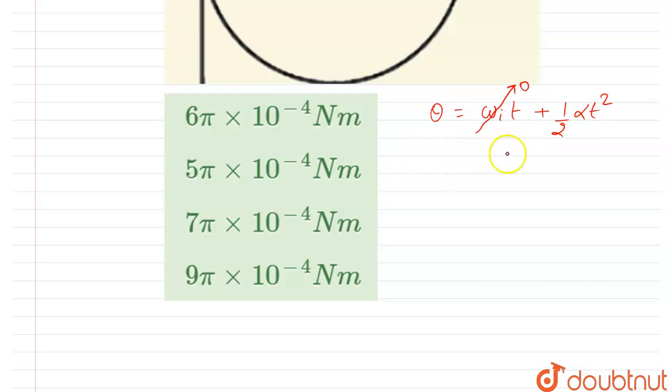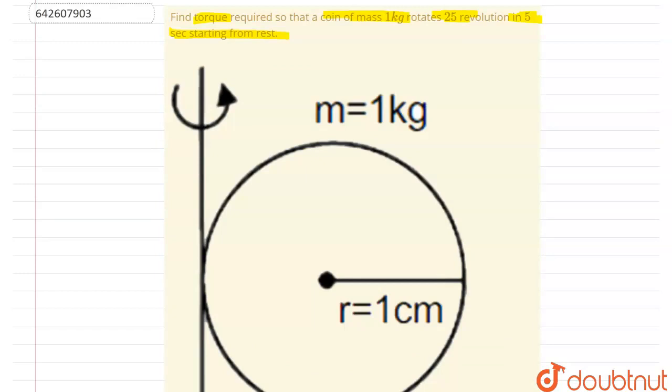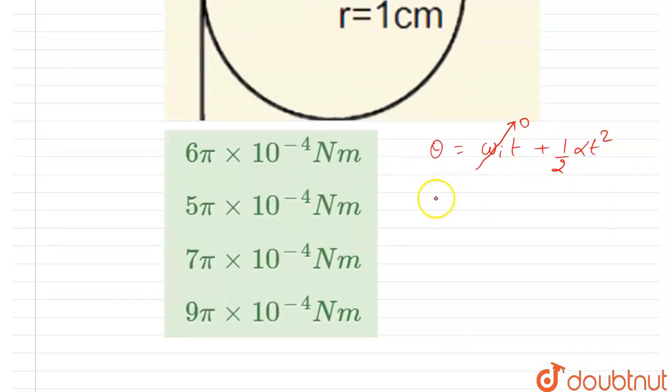and theta is 25 revolutions, so I will write 25 times 2π. Just put the values here, you